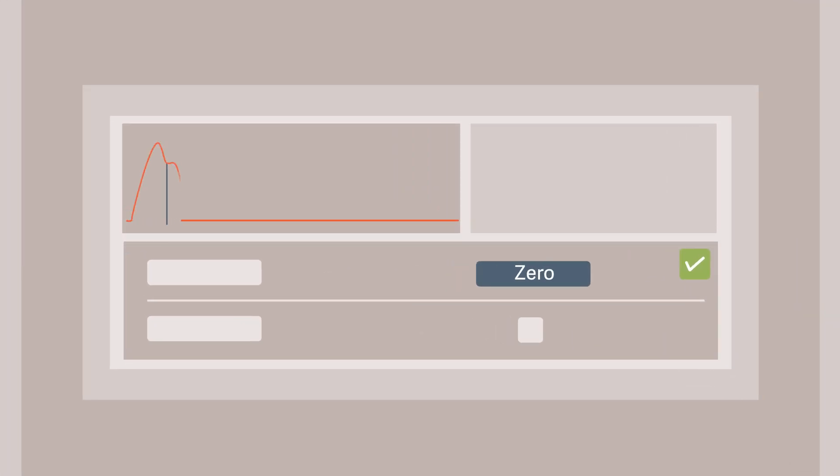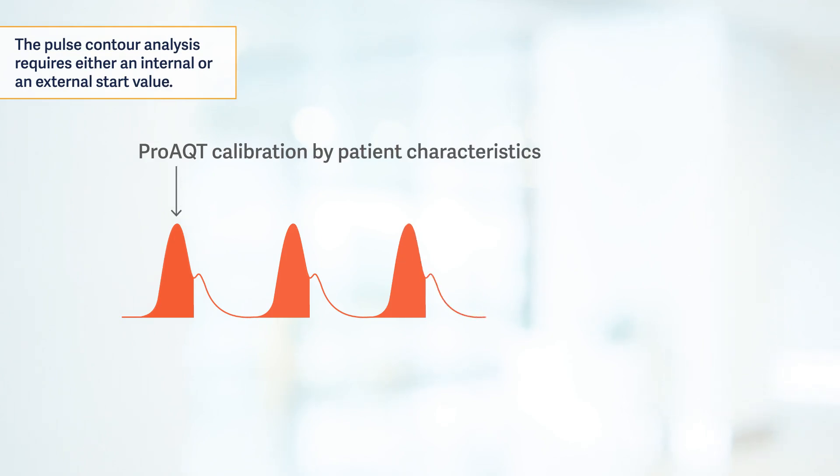The pressure curve reappears on the monitor. Finally, enter the Current Central Venous Pressure, or CVP, for Systemic Vascular Resistance Index, or SVRI, calculation. Note that the pulse contour analysis requires an internal start value based on the patient characteristics and details of the arterial pressure curve, or an optional input of an external start value, such as a measured CI value from an external source, for example, echocardiography.